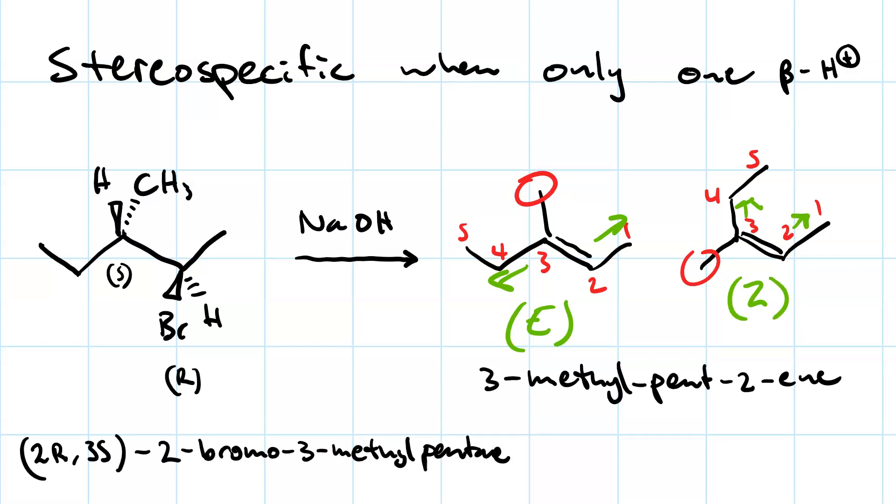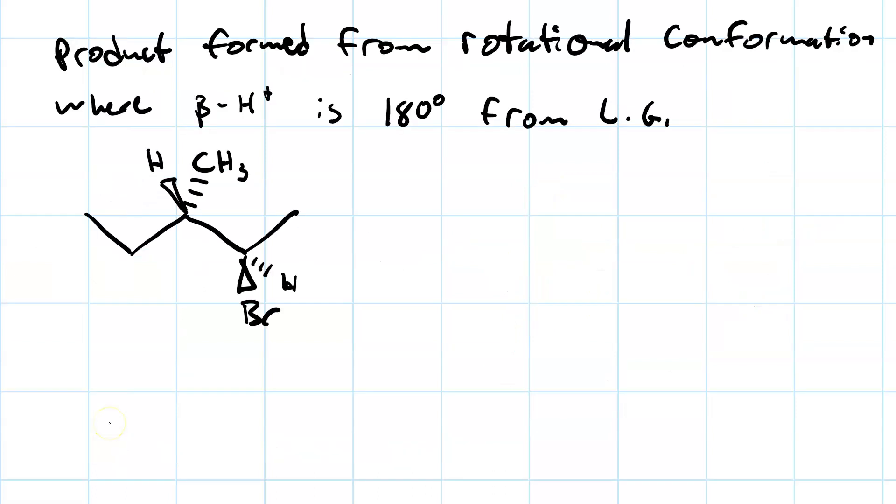Which one do we get? The answer is, we get whichever one results from the rotational conformation in the substrate where the beta proton is at 180 degrees from the leaving group. This 180 degree torsion angle is necessary to form the pi bond. You could also do it from a 0 degree torsion angle, but that would mean going through an eclipsed conformation, which is horribly unstable.